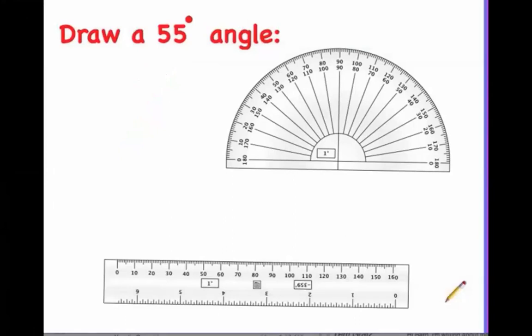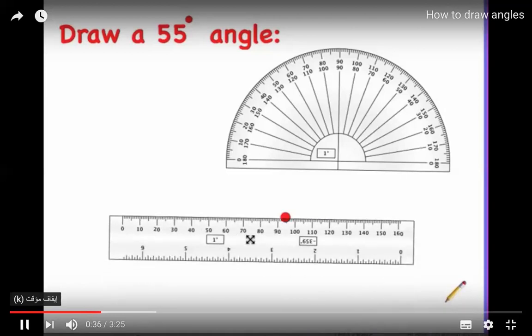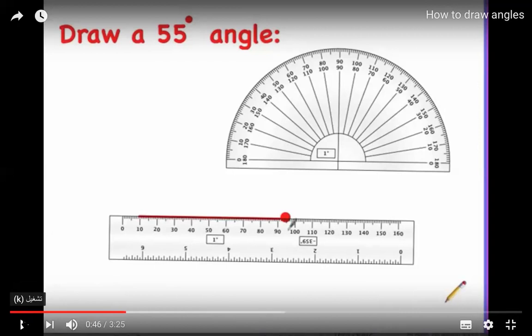Since 55 degrees is smaller than 90 degrees, it will be an acute angle. The first thing you need to do is draw a vertex, then line up your straightedge and connect it to that vertex — so you draw a point first, then draw a ray from it.